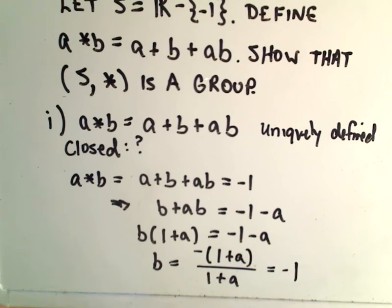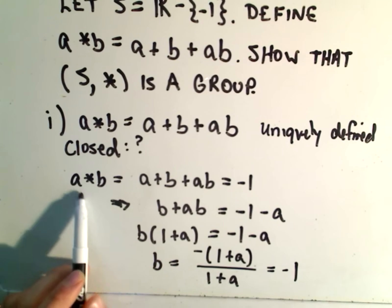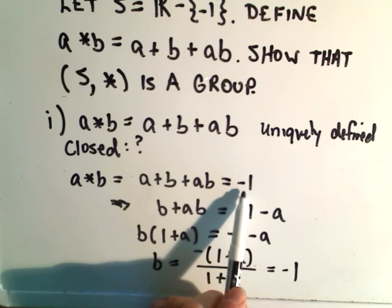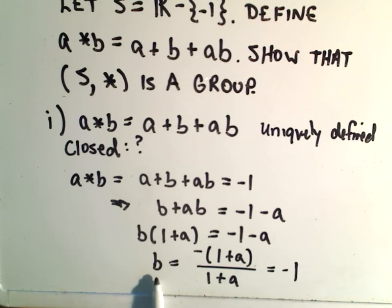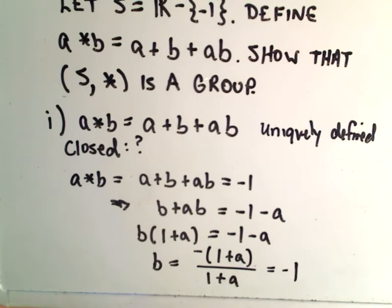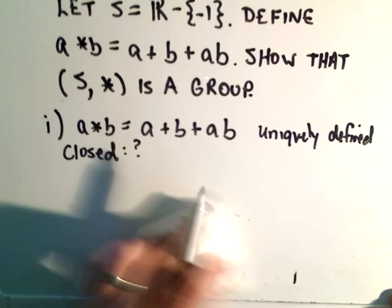So the only way that our binary operation could give us a bad result, negative one, is if one of the original numbers was negative one to begin with. We can't pick negative one to begin with, so this situation can't happen. So it is going to be closed.